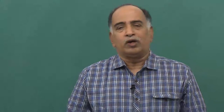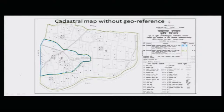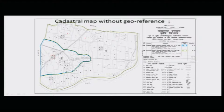Let me show you what we were using before. This map is a cadastral map without geo-reference — what we call a village map. This is the boundary of a village; these are all the agriculture plots, and these are the settlement areas where people live. Village means you have a settlement and you have the agriculture land. In some places, in addition to agriculture land, there may be some other land also, marked in a different mode.